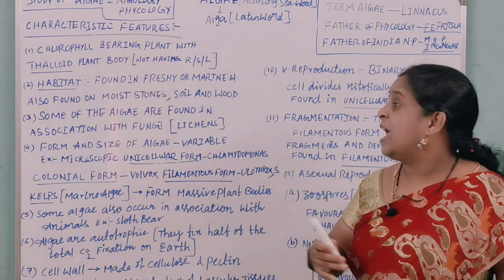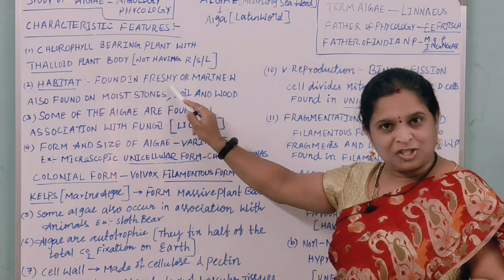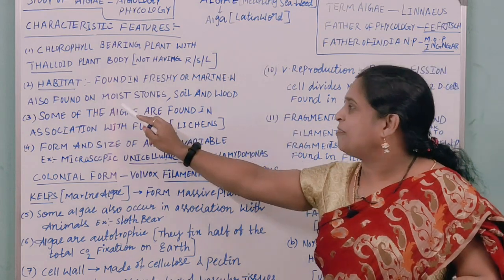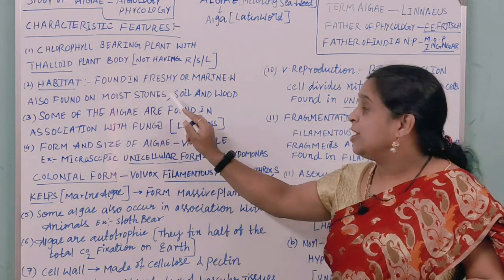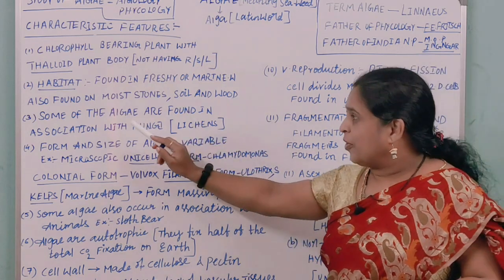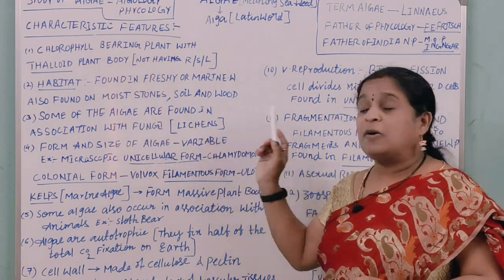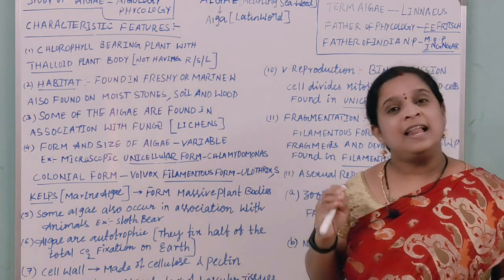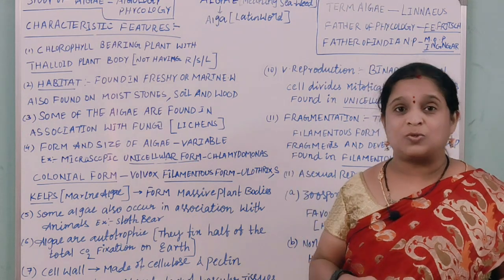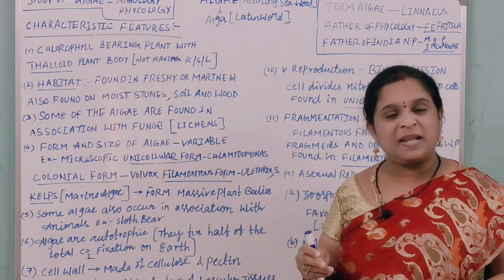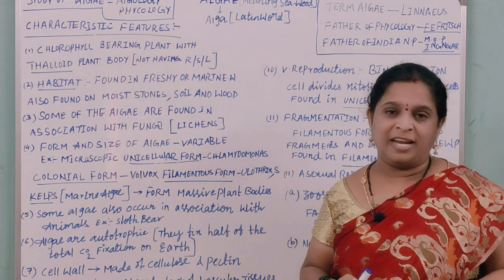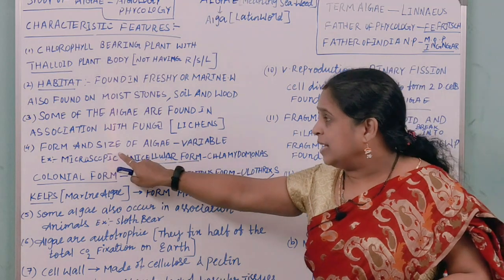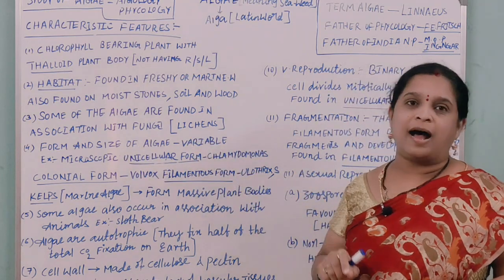The second characteristic is habitat, which represents the dwelling place of an organism. Algae are found in fresh water as well as marine water, and also on moist stones, soil, and wood. The third point is that some algae are found in association with fungi, forming lichens, where a symbiotic association takes place between an algal and a fungal component.